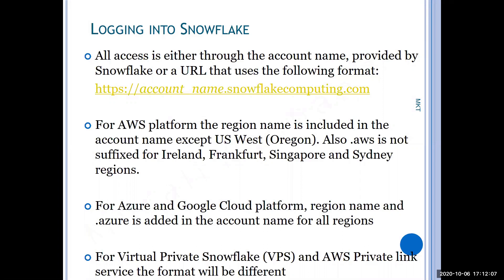For Azure and Google Cloud, all region names will be in the URL, and dot Azure or dot GCP will be suffixed in the URL. For Virtual Private Snowflake, you cannot register through the regular URL — you need to approach Snowflake support separately at the organization level. As an individual, you cannot do it. With Virtual Private Snowflake, you will have your own private network.